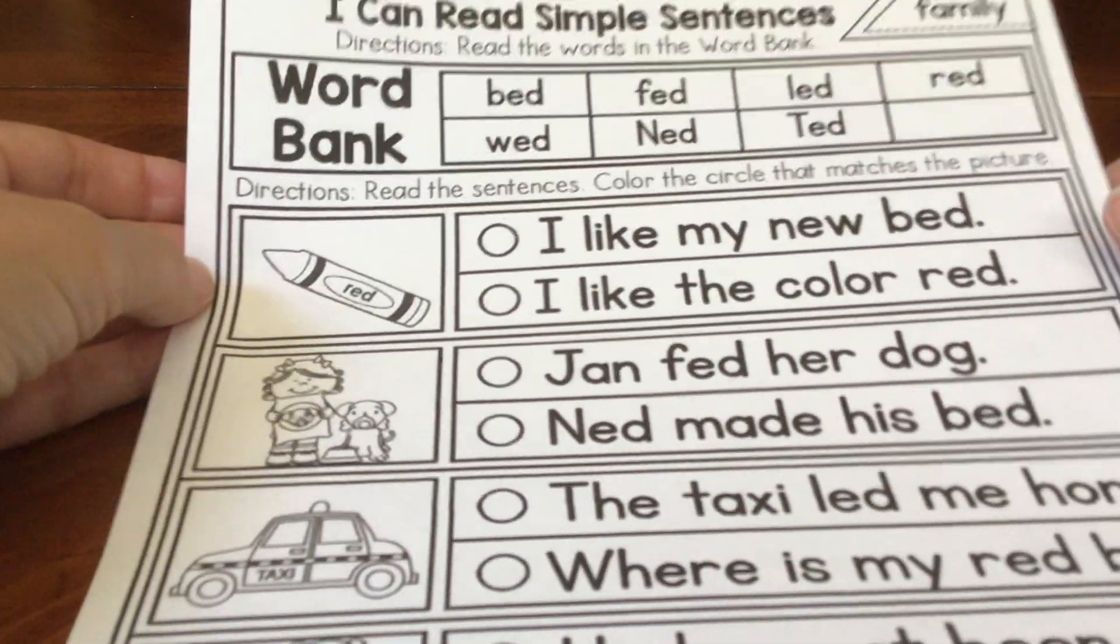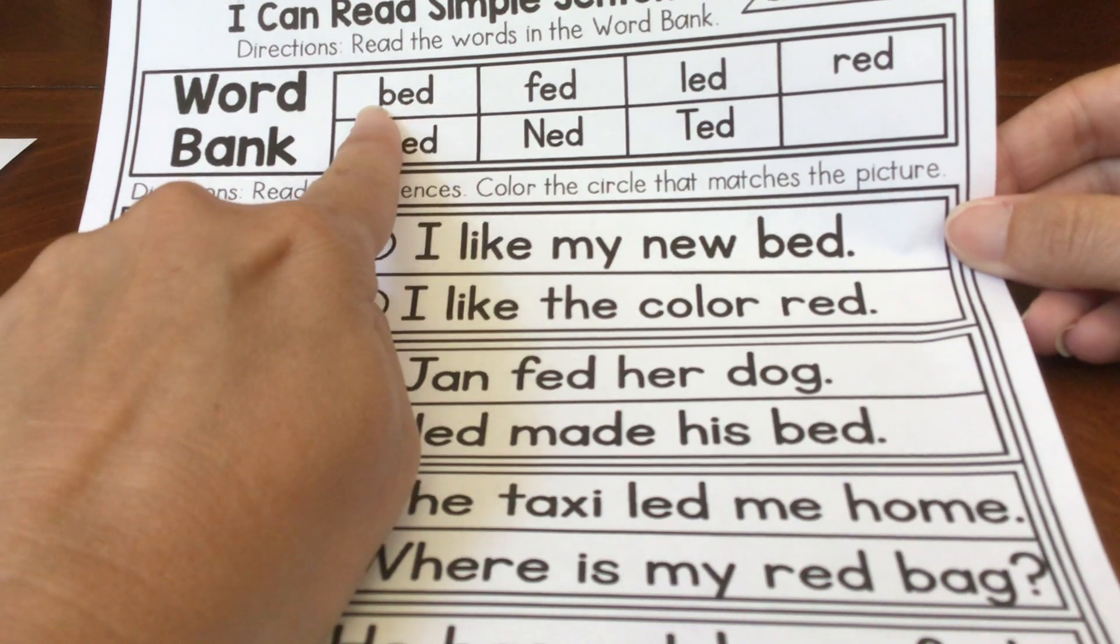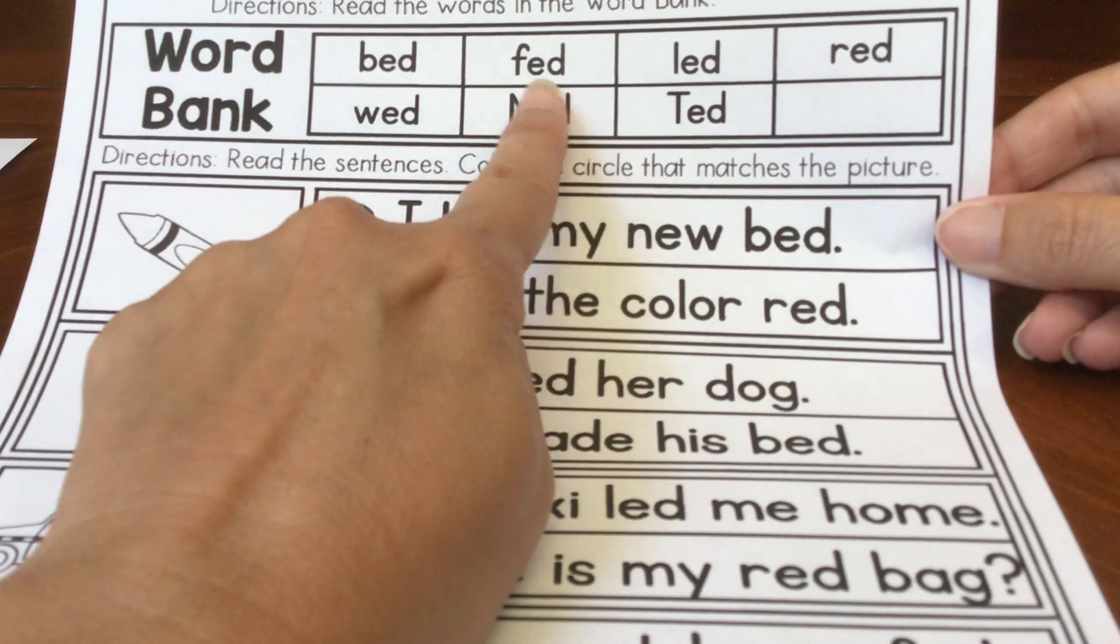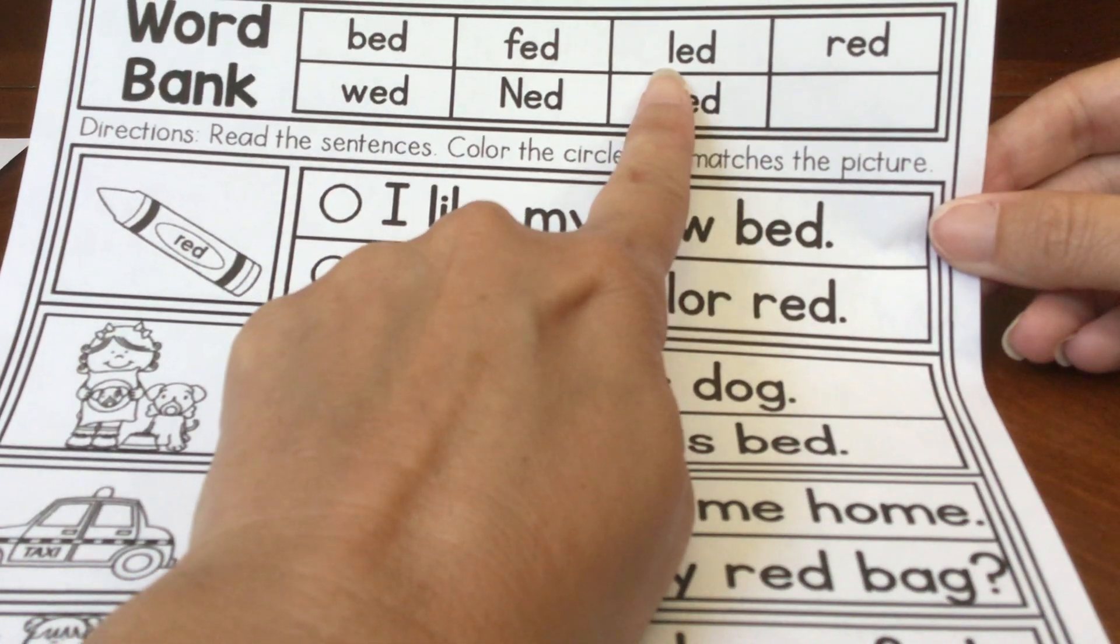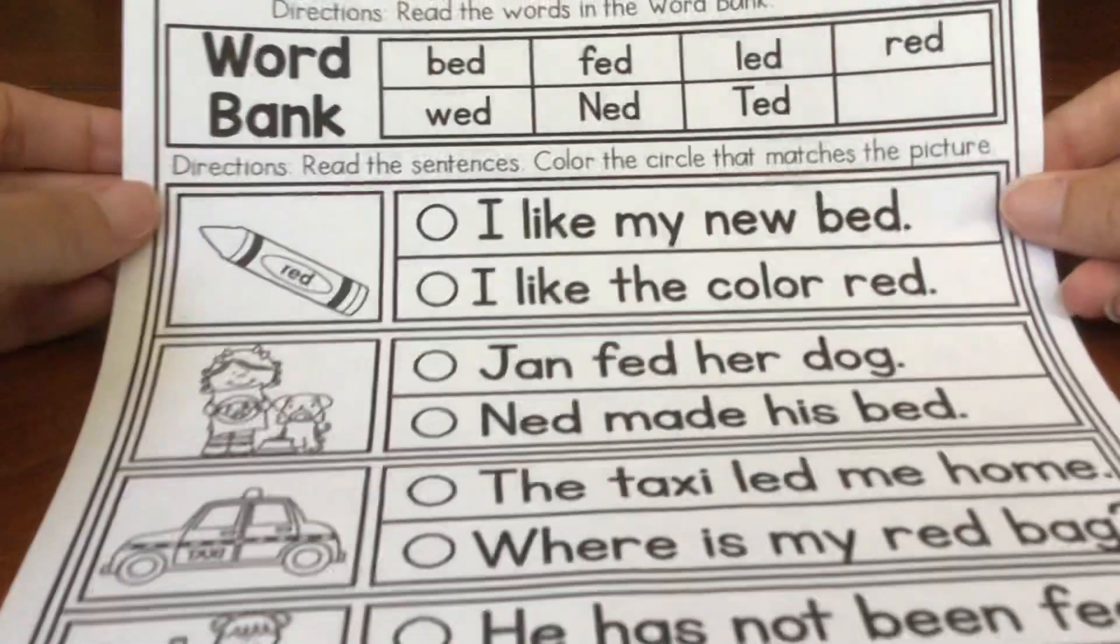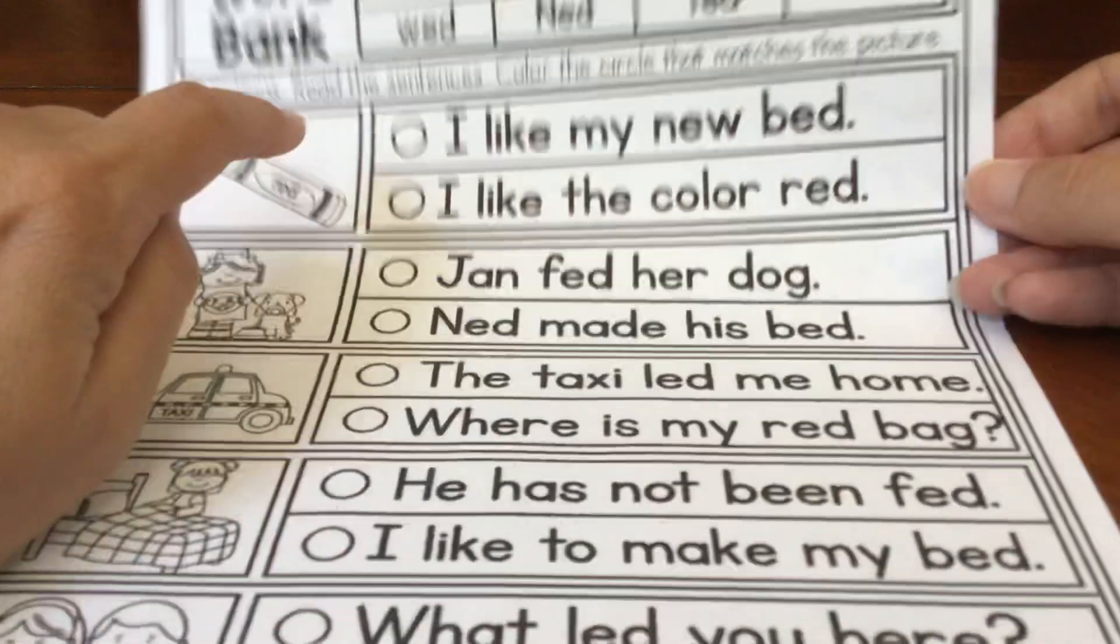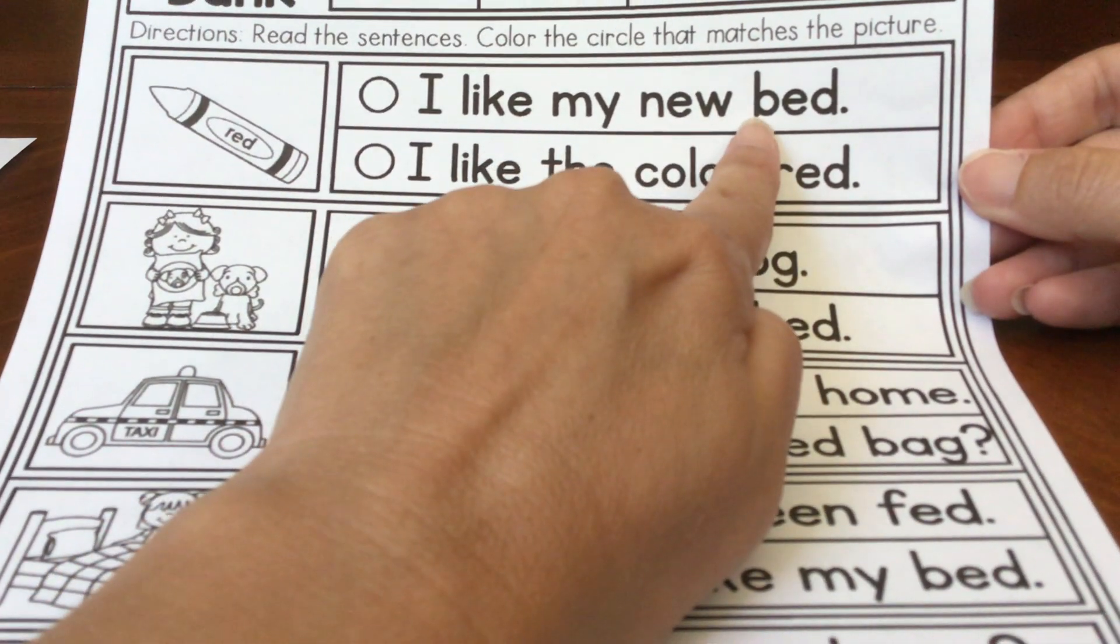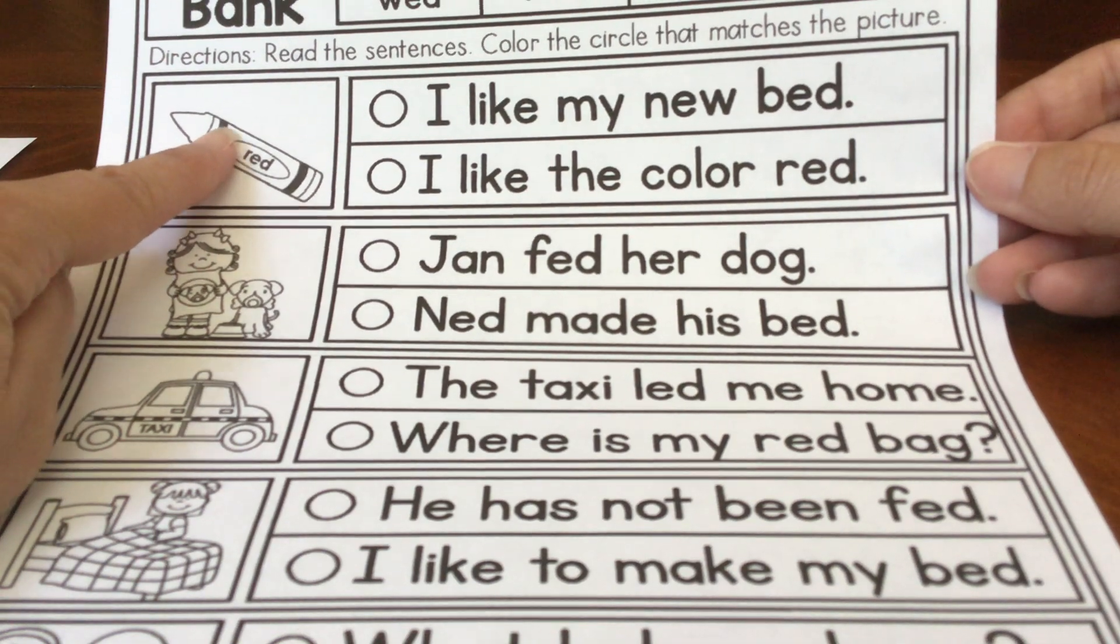And our last page for today says, I can read simple sentences. I want you to read the words in the boxes first. Then you're going to look at the picture. Think about what you see. I see a crayon. It has a word on it. It says red. Then I've got to read these sentences. There are two sentences here. I like my new bed. I like my new bed. Does that go with this picture? I don't think so. Let's try the next one.